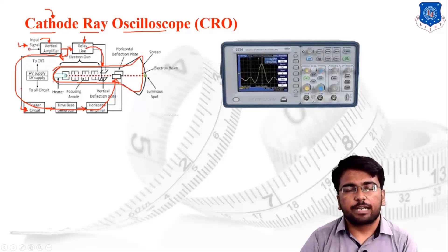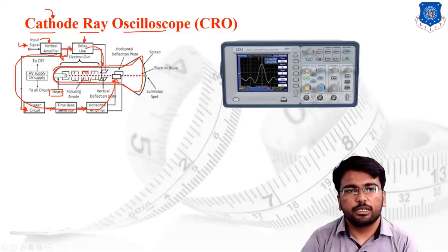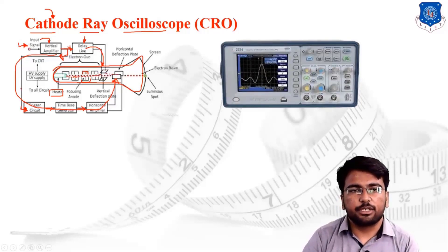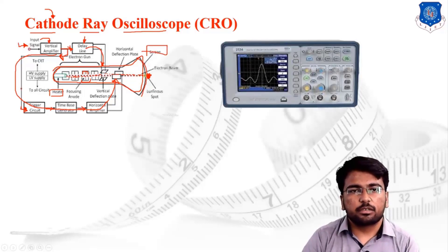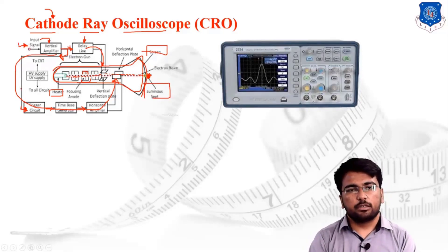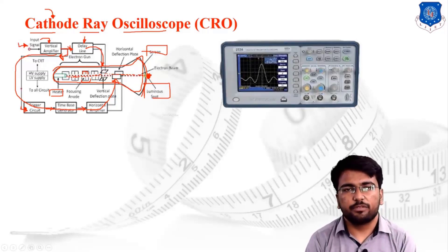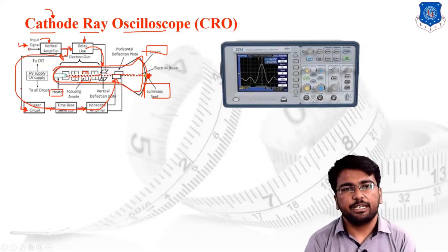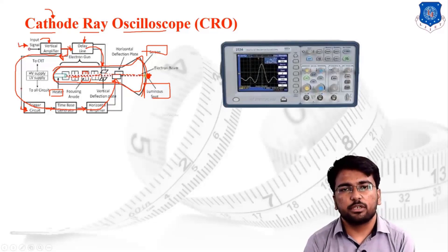Inside the cathode ray tube, a heater generates cathode rays. Focusing anodes are provided on both sides, and the flow of electrons passes through the center line of the setup. The electrons then pass through the vertical deflector and the horizontal deflector, generating a triggering effect on the display. The screen contains a luminous material — once electrons strike the screen, they generate a luminous spot and produce illumination. This illumination allows us to check the image, plot, graph, or specific points on the graph over the screen, and continuous illumination generates a graph image.